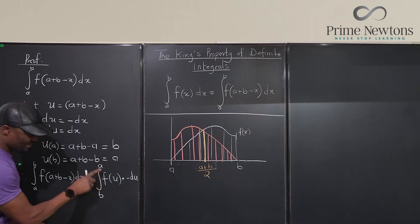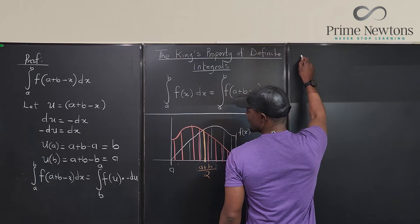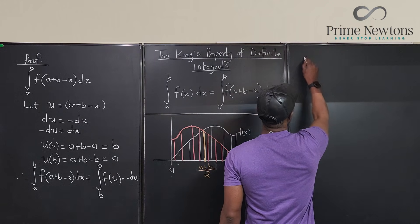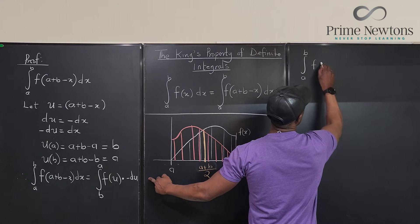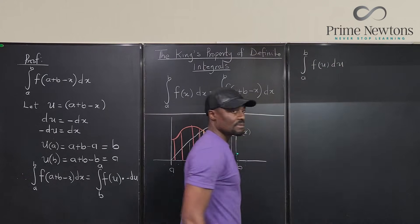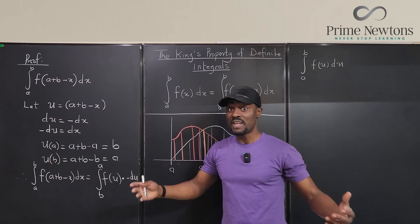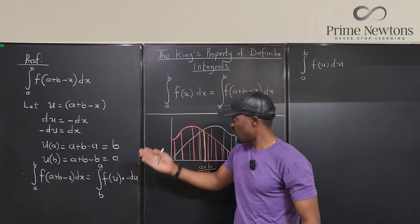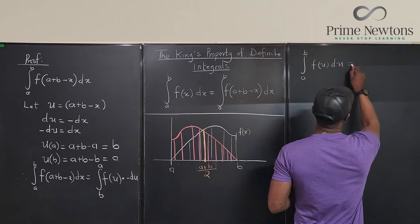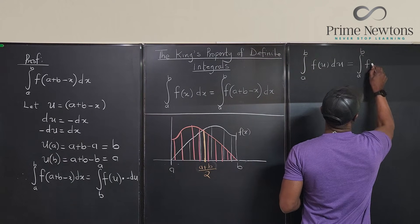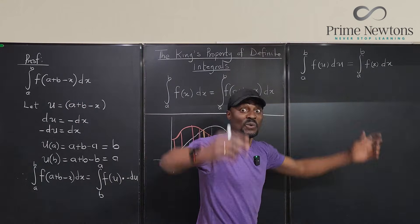That negative sign can flip the bounds back, so what we have is the integral from a to b of f(u) du. Remember, when you're evaluating a definite integral you're free to use any letter. So this integral is exactly the integral from a to b of f(x) dx. The expression we started with is the same thing as the original integral — the King's Property is proven.